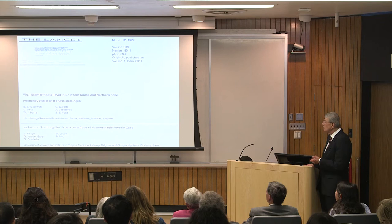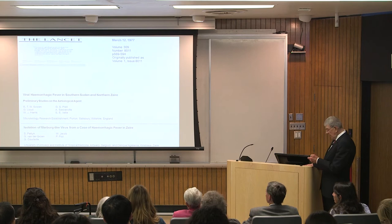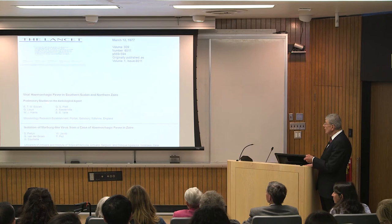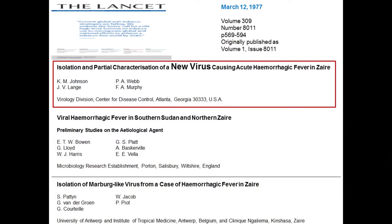In the next year, the three laboratories published their data in The Lancet. The Antwerp group published on isolation of Marburg-like virus from hemorrhagic fever. There was a report on viral hemorrhagic fever in South Sudan. And then the CDC published: 'Isolation and characterization of a new virus causing acute hemorrhagic fever.'